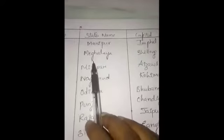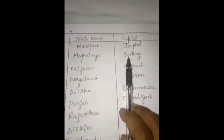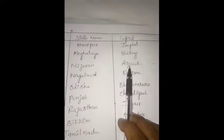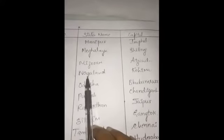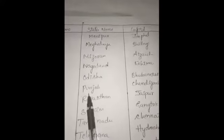Meghalaya state's capital is Shillong. Mizoram state's capital is Aizawl. Nagaland state's capital is Kohima — Kohima is the capital of Nagaland. And Odisha state's capital is Bhubaneswar.